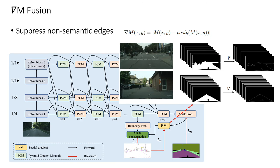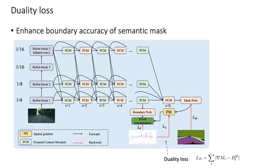The spatial gradient mask is used to suppress non-semantic edges. We design duality loss to enhance boundary accuracy of semantic mask.